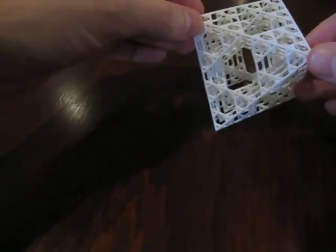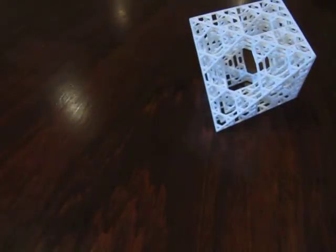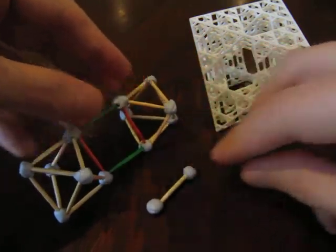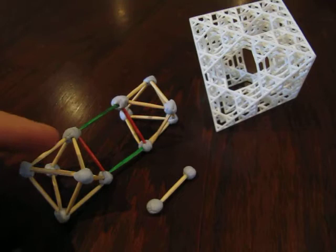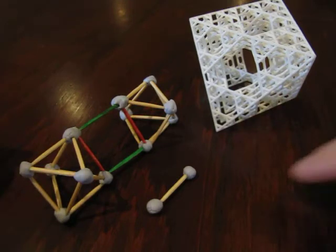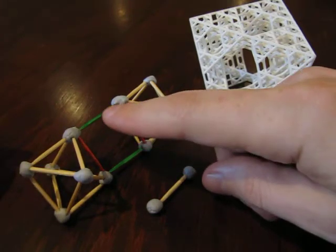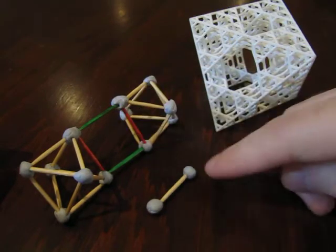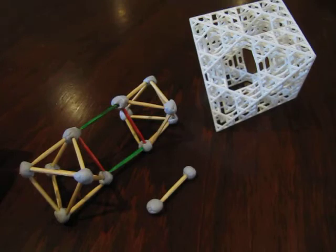Let me describe the substitution rule. So we start with just a single octahedron, and what we're going to do is every time we see a vertex, we're going to replace it with a small octahedron. And every edge that we see, we're replaced by these two parallel edges, colored green here, connecting the two small octahedron that were the vertices beforehand.